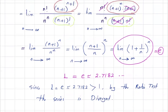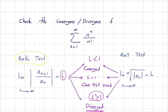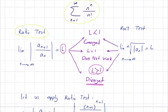Let us recap quickly. We have the series n to the power n divided by n factorial. We apply the ratio test: find the limit of the absolute value of a_{n+1} divided by a_n as n goes to infinity. If the limit equals L, there are three scenarios: if L is less than 1, you have a convergent series; if L equals 1, this test doesn't work; if L is more than 1, you have a divergent series.